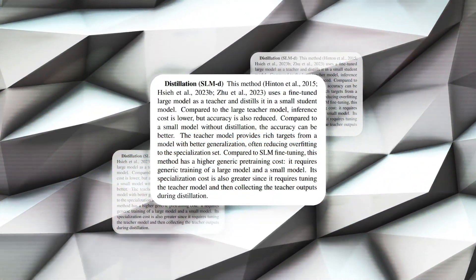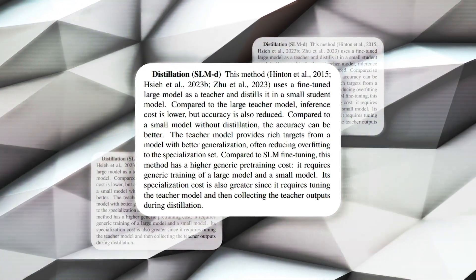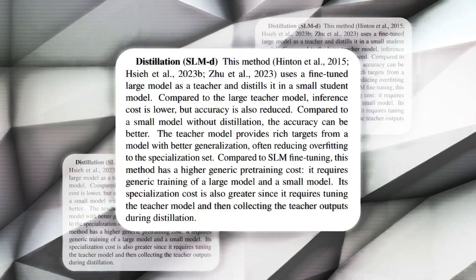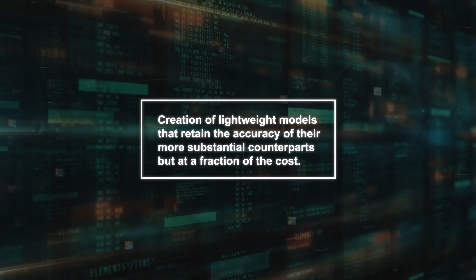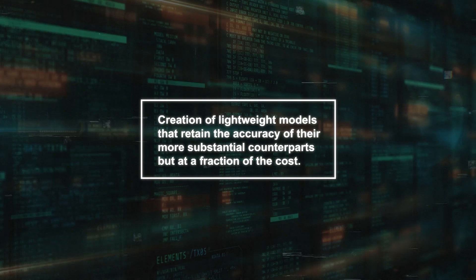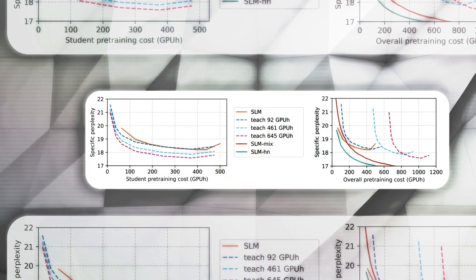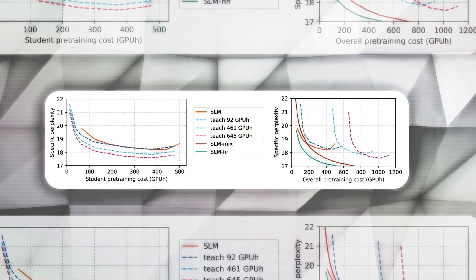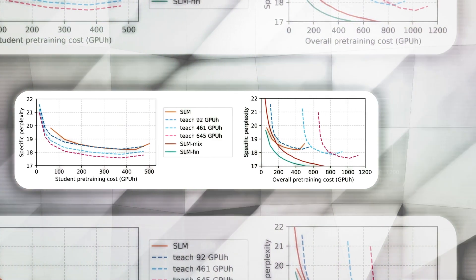Distillation is another strategy. It involves transferring knowledge from a large, complex teacher model to a simpler, smaller student model. This process enables the creation of lightweight models that retain the accuracy of their more substantial counterparts but at a fraction of the cost. Distillation addresses the dual challenge of keeping both pre-training and inference costs low, making advanced AI deployable on less powerful devices.